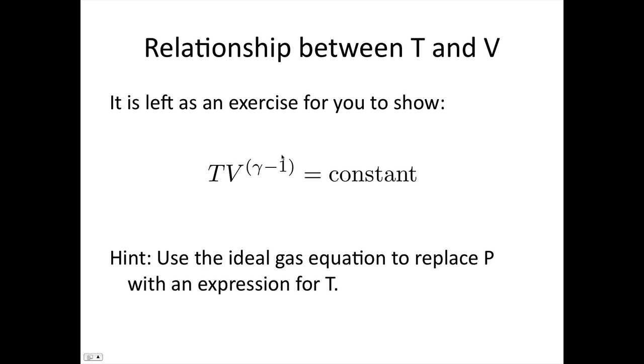And now it's left as an exercise for you to show that TV to the gamma minus 1 is constant. The easiest way to do this is just to use the ideal gas law to replace P with T.